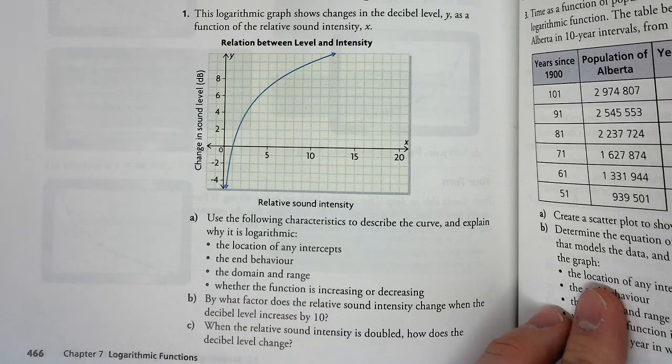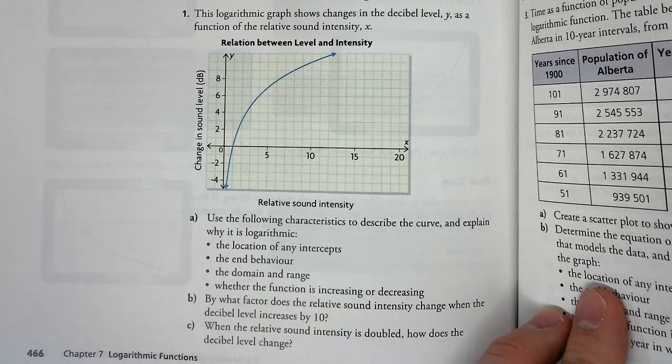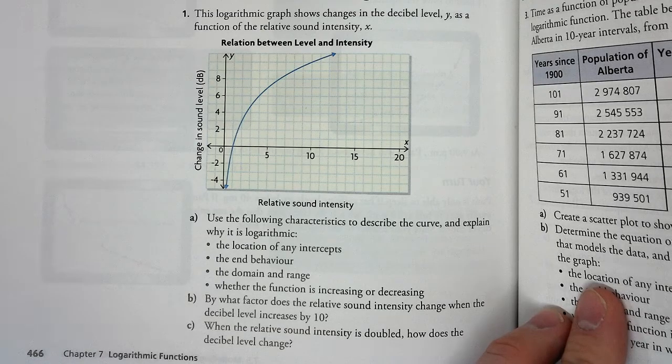When the relative sound intensity is doubled, you go from 1 to 2, how does the decibel level change? So maybe going from 2 to 3 is more obvious. A sound intensity of 2 has a decibel level of 3. A sound intensity of 4 has a decibel level of 6. So that's doubled.